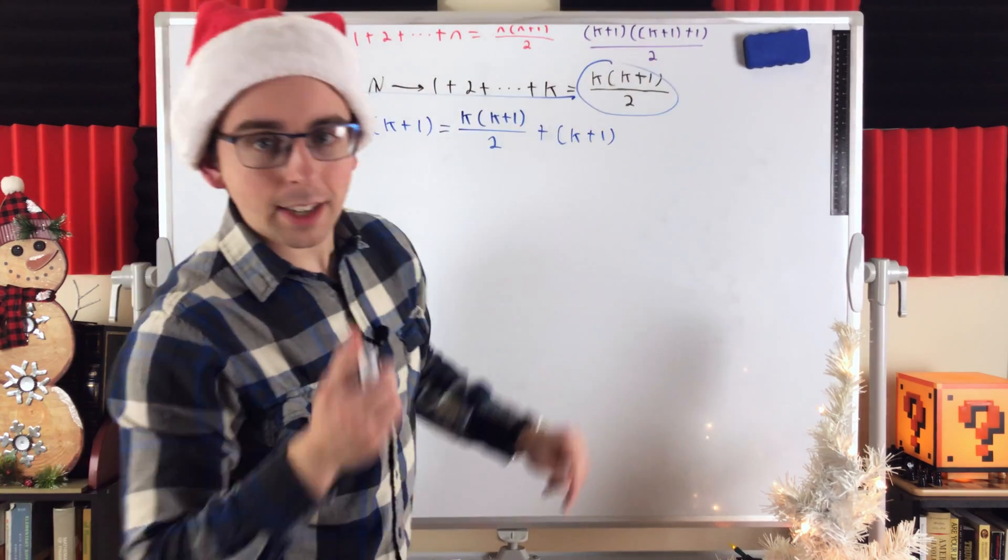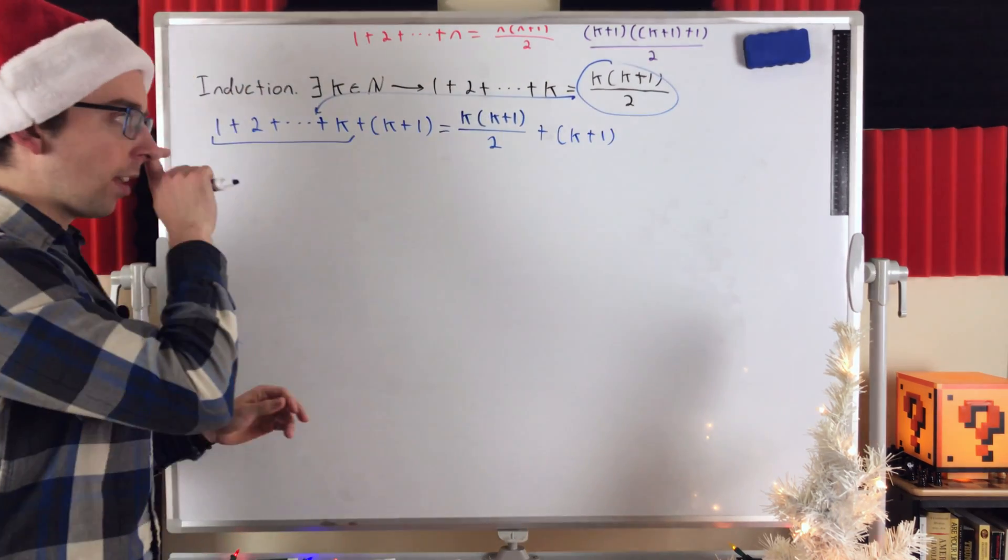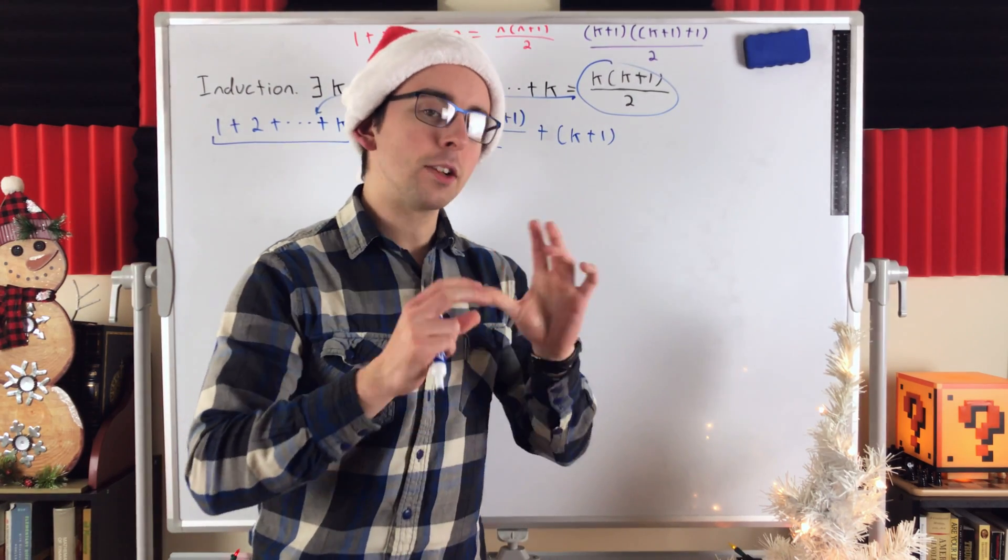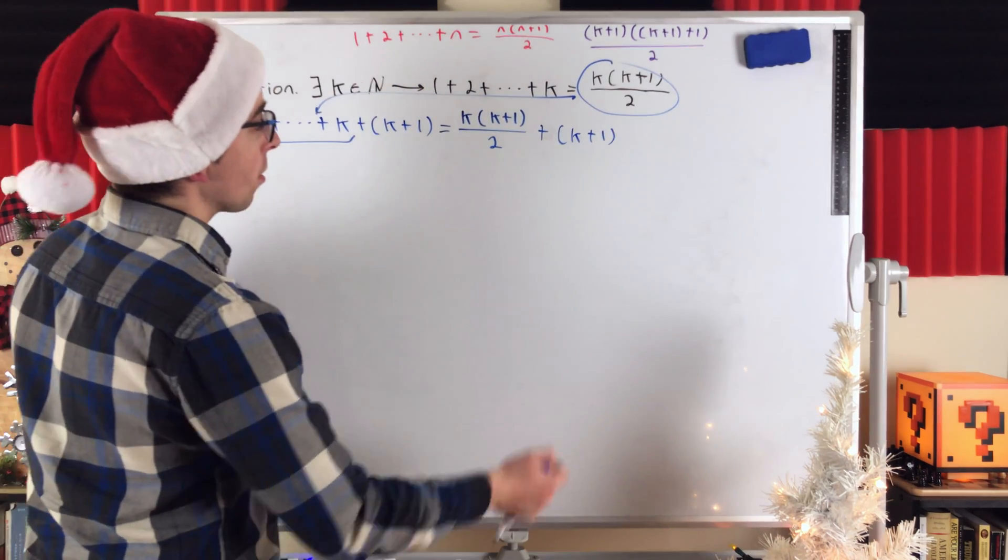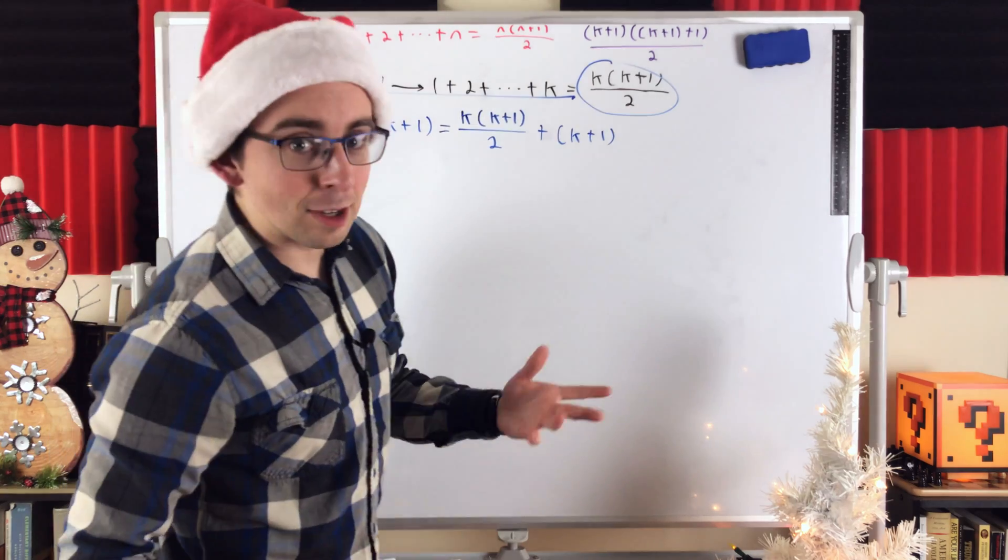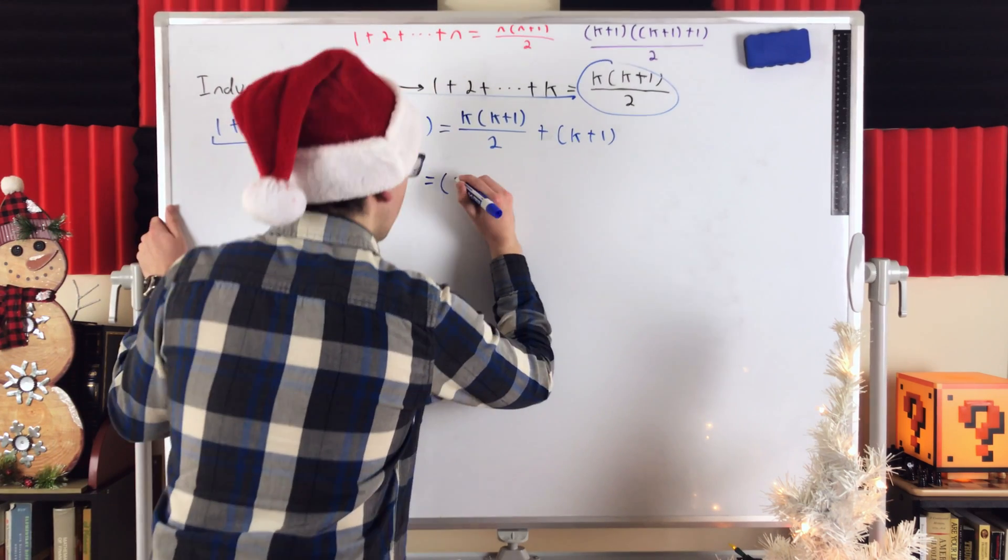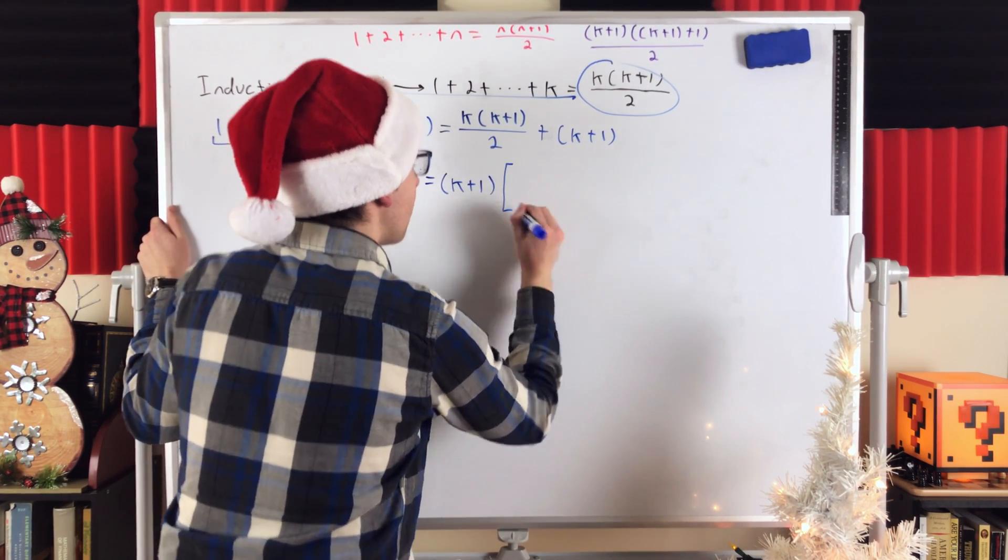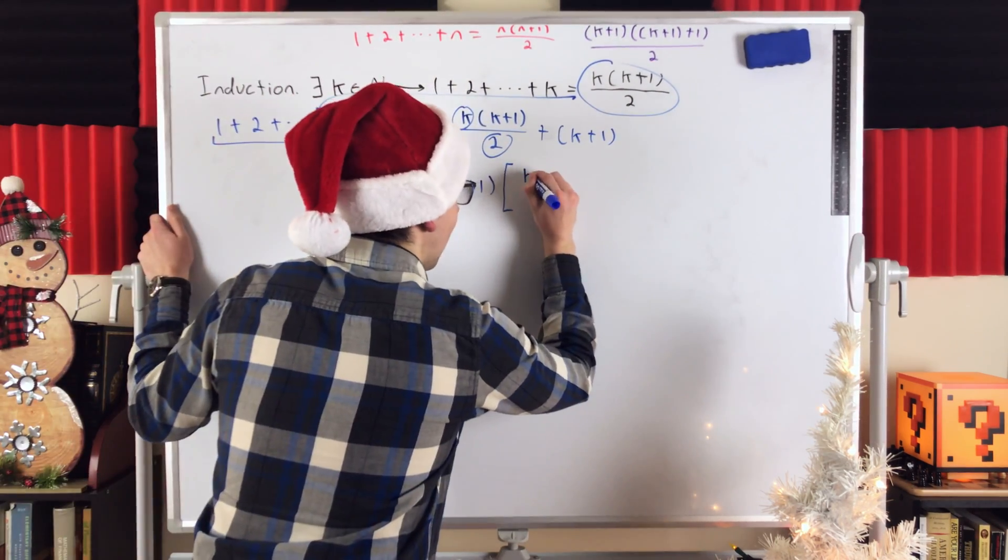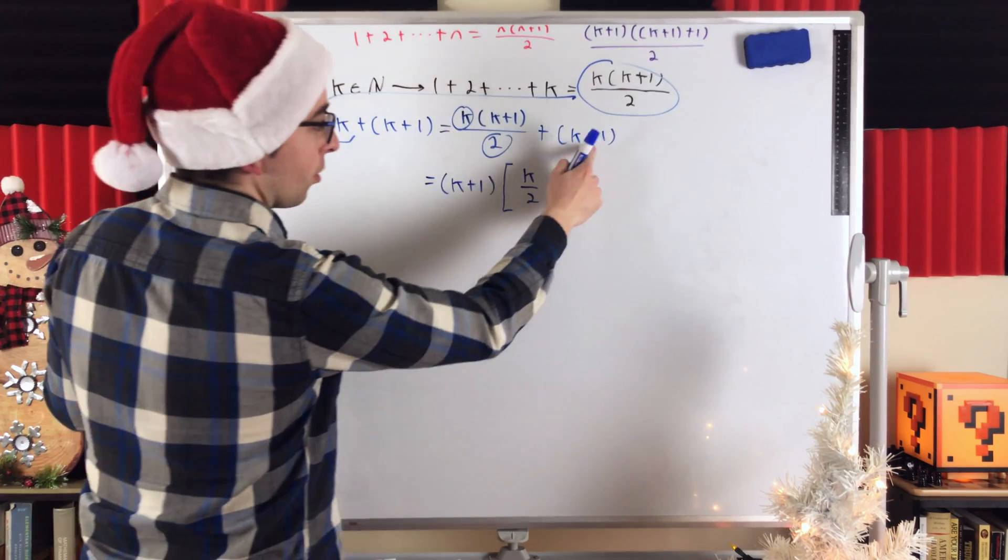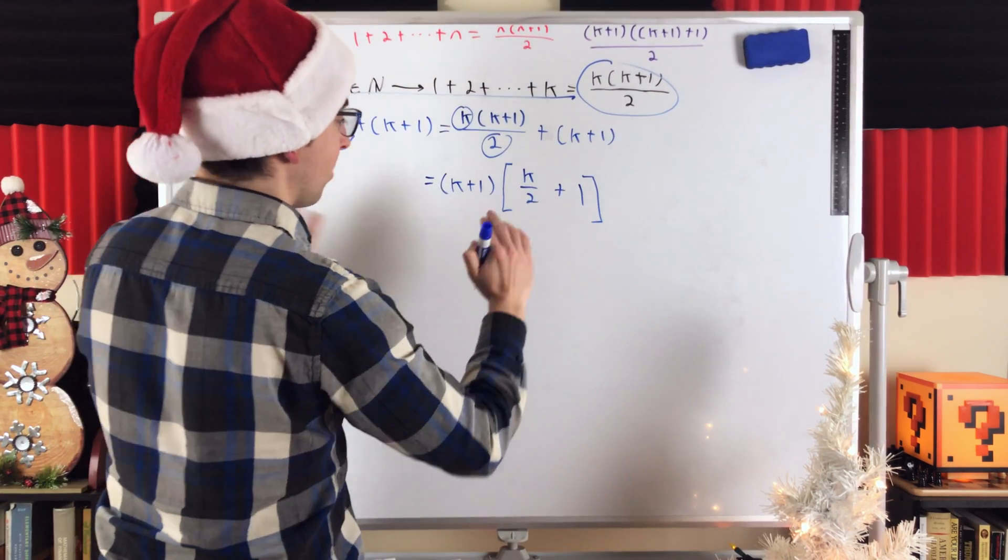We know, looking at the expression we want, that it has the form of two factors getting multiplied together and divided by 2. So, right now, we've got two terms being added together. If we could sort of turn that into two factors, that would be getting closer to our final solution. We see here that we could factor k plus 1 out of both terms, so that seems like a good idea. Let's try that. So, we'll write this is equal to factoring out k plus 1. We've got our factor of k plus 1, and then, what do we get when we factor k plus 1 out of this term? We're just left with k over 2. So, that's k over 2, and then what about when we factor k plus 1 out of this term? Well, that's just 1.